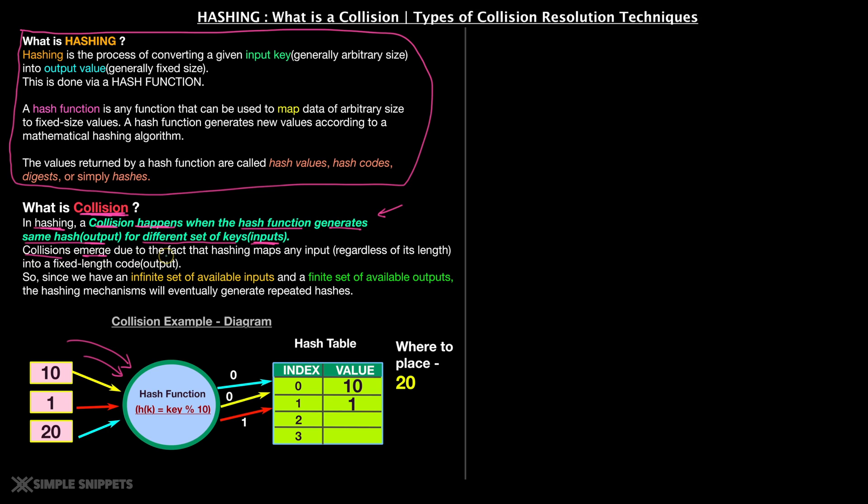Well, basically collision emerges due to the fact that hashing maps any input generally of arbitrary size. So the input generally is of any size, any random size, but the output is of a fixed length code. Meaning that the input generally is of infinite set of available inputs, so we have huge set of inputs, but there are always a finite set of available outputs. And this basically means that eventually the hash function will generate repeated hash for different set of inputs. This is the actual crux or actual reason behind the collision occurrence.